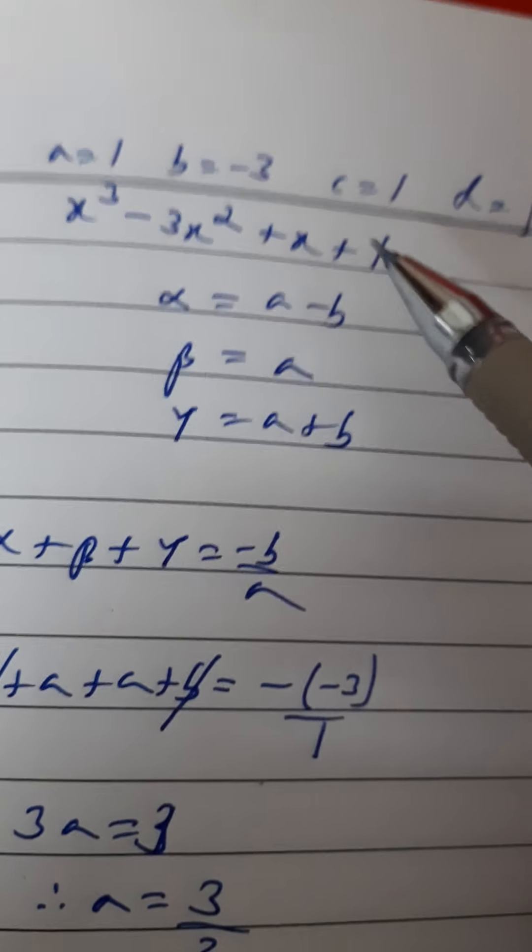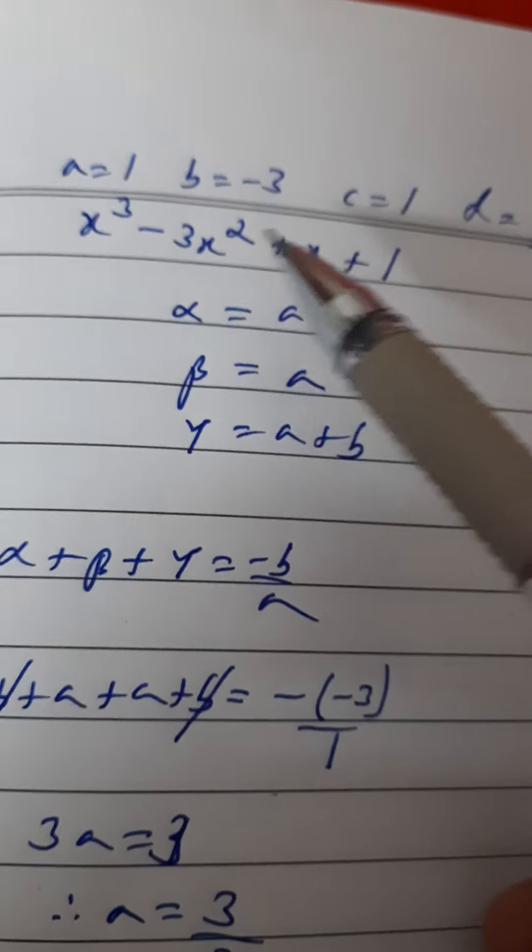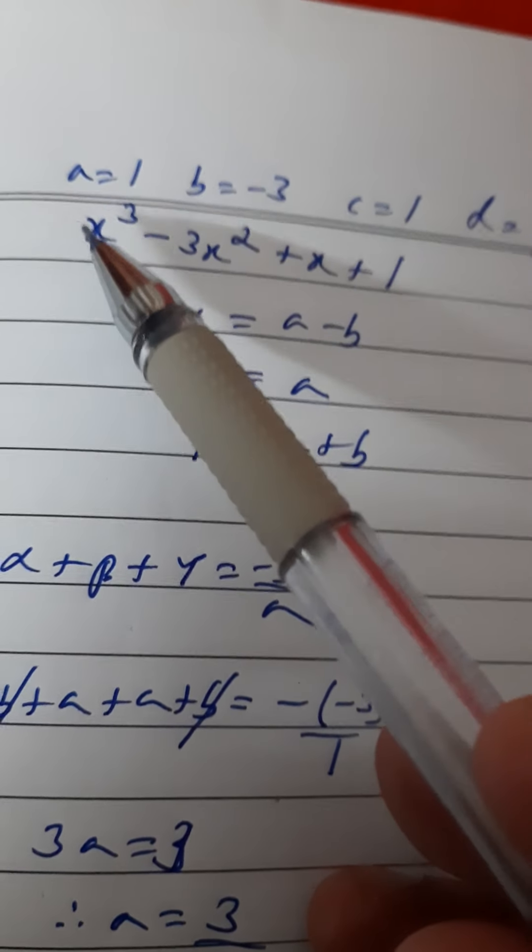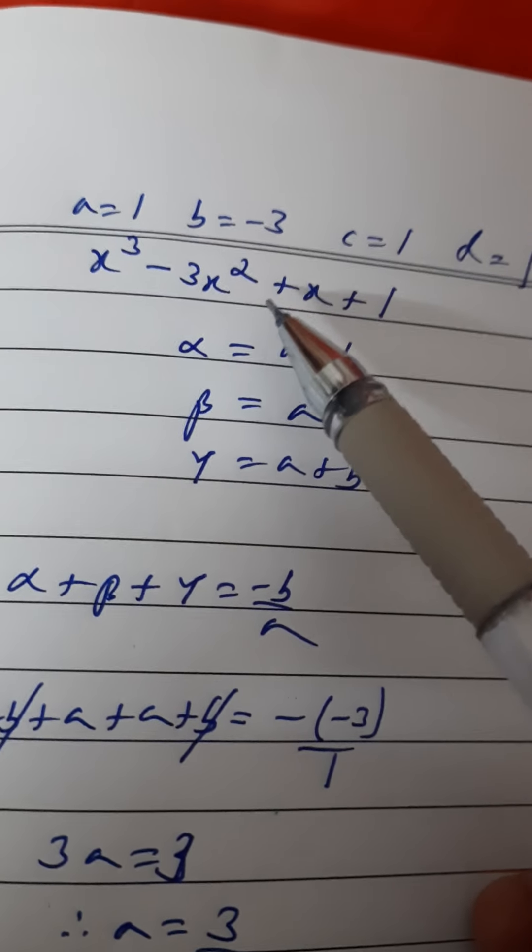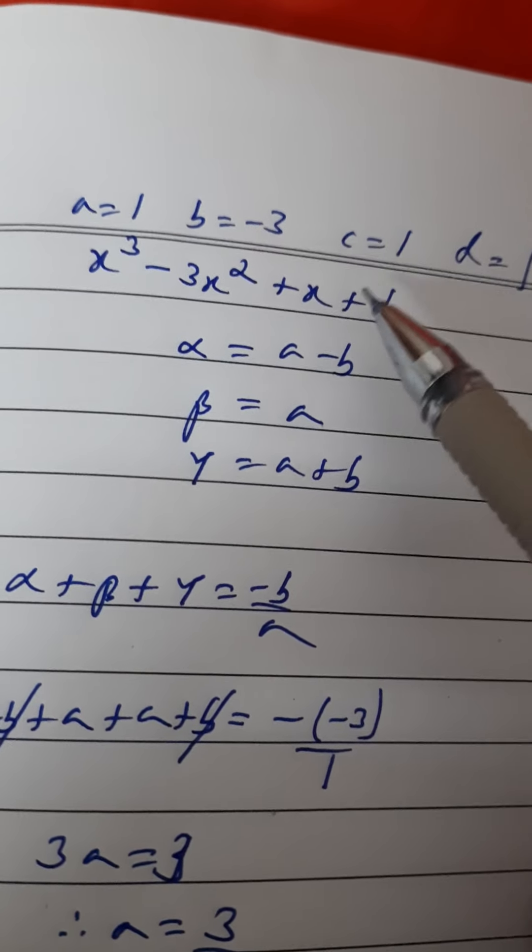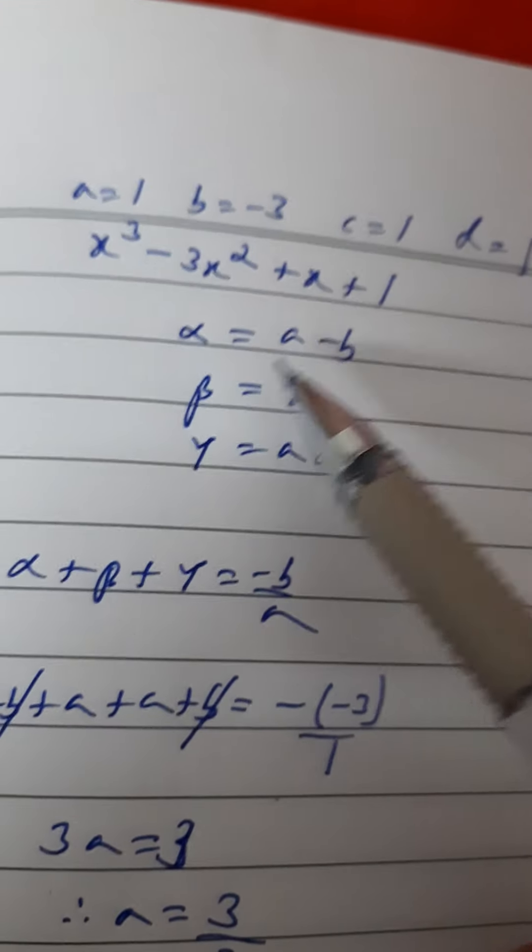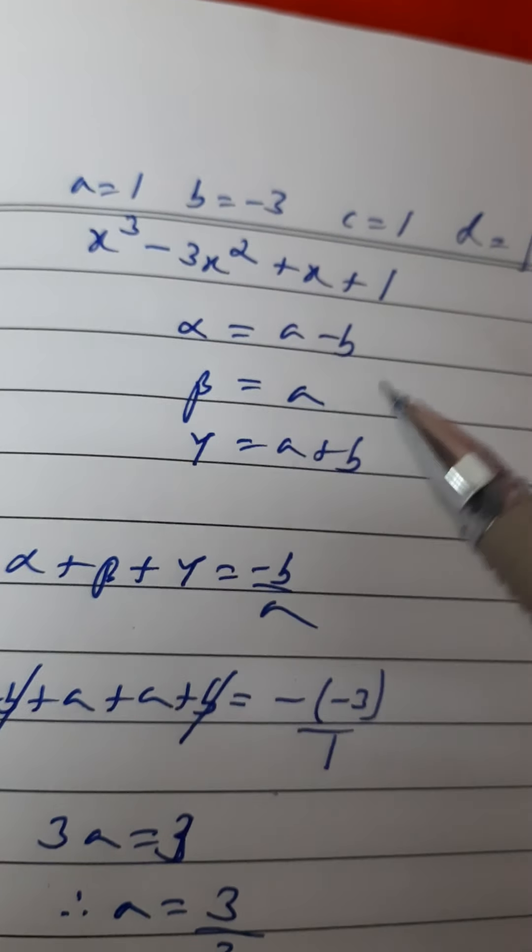We have done this in question number one and two as well. a is coefficient of x³, b coefficient of x², c coefficient of x, and d is the constant. Now the question is find the values of a and b.